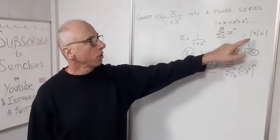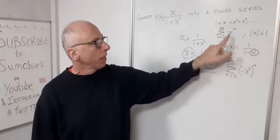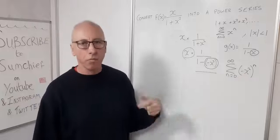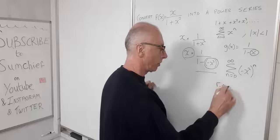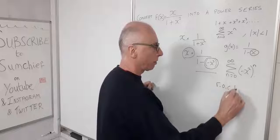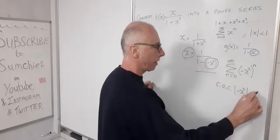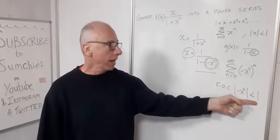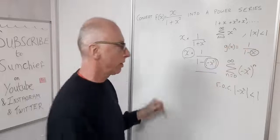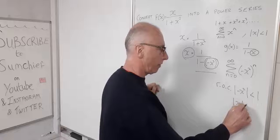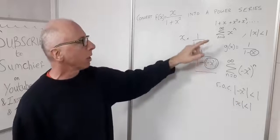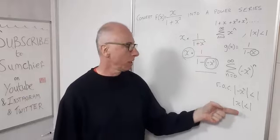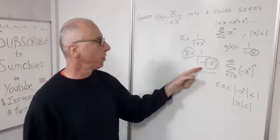The next thing to check is our radius of convergence. For our known series the absolute value of x is less than 1. Here we have minus x squared, so the radius of convergence requires the absolute value of minus x squared to be less than 1. Solving that for x, we still get x less than 1 — so the radius of convergence matches and we're fine to proceed.